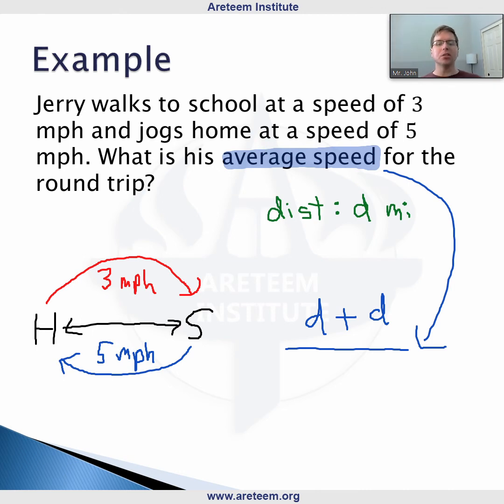Now, what is the total time? Well, in terms of the total time, he's walking 3 miles per hour to school. So to walk d miles, he is going to take d divided by 3 hours. Walking home, he speeds up to 5 miles per hour. So it's d divided by 5 miles per hour walking home.